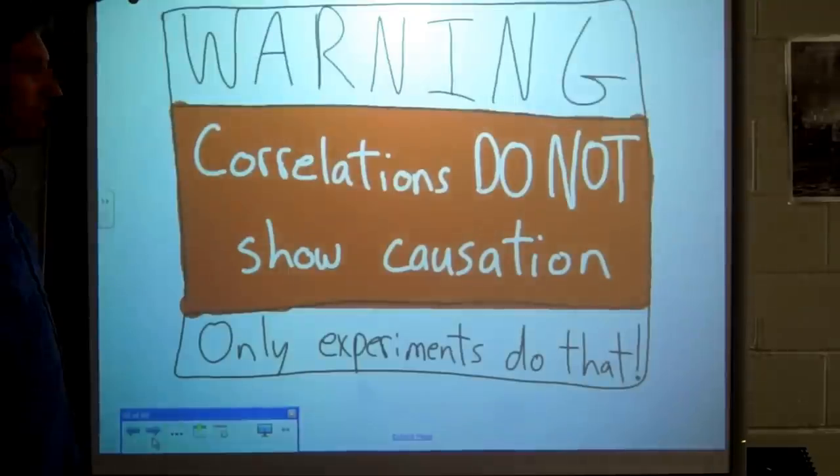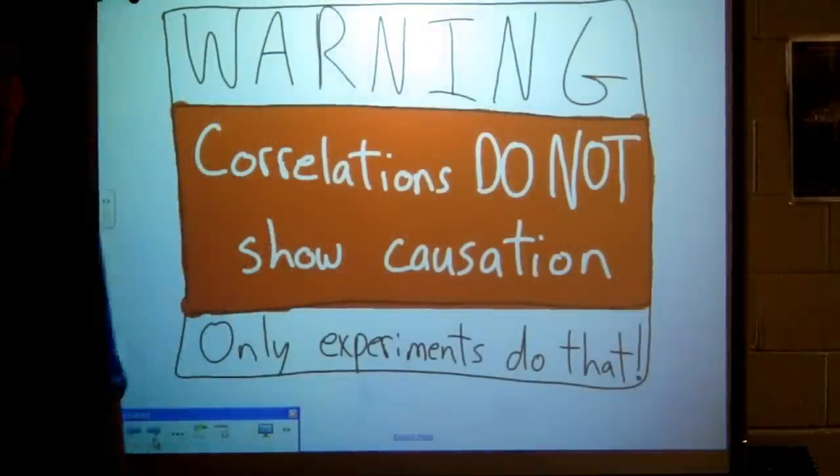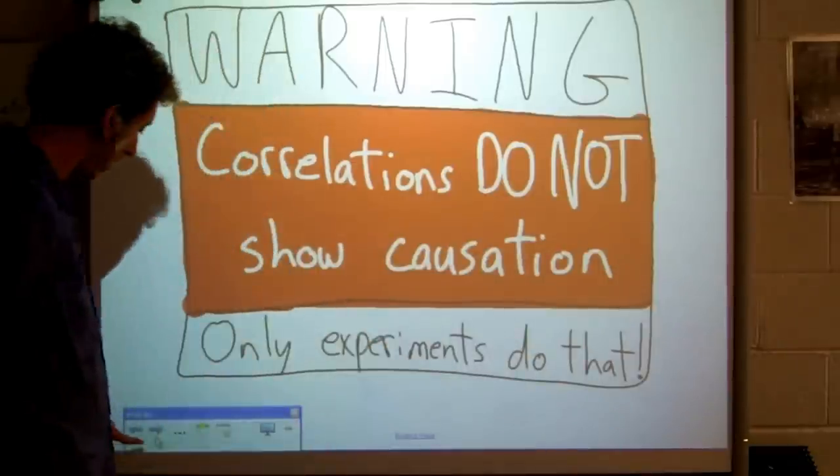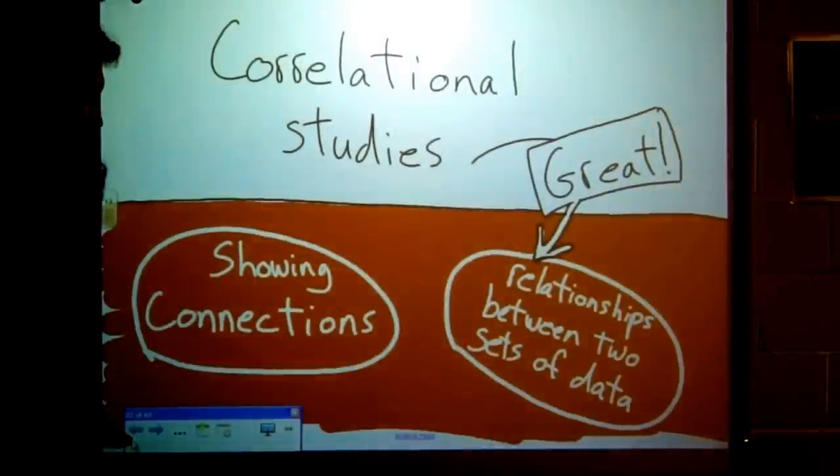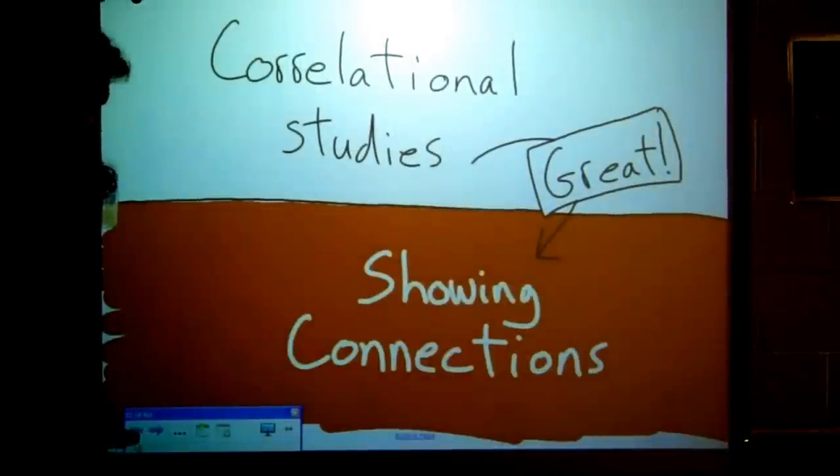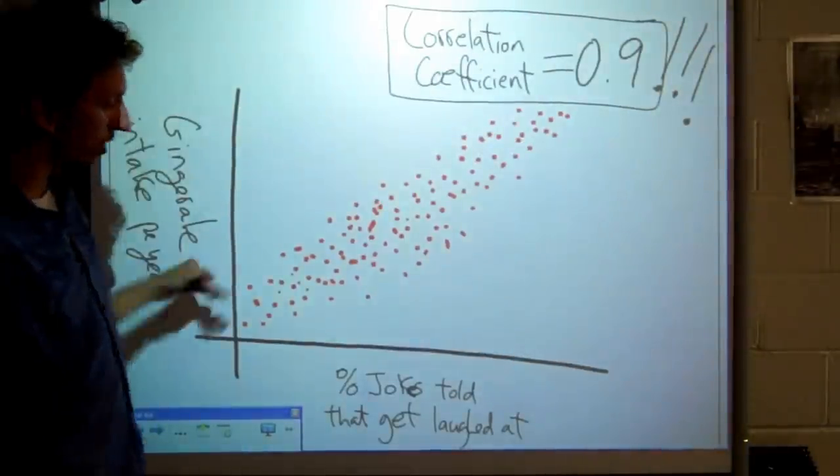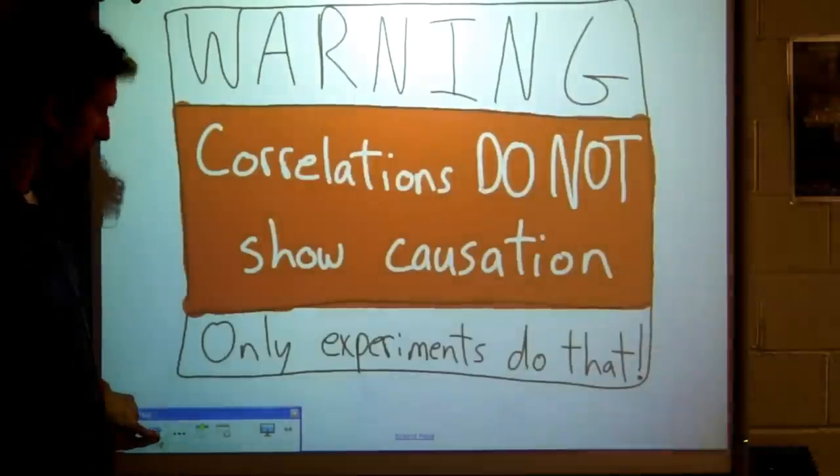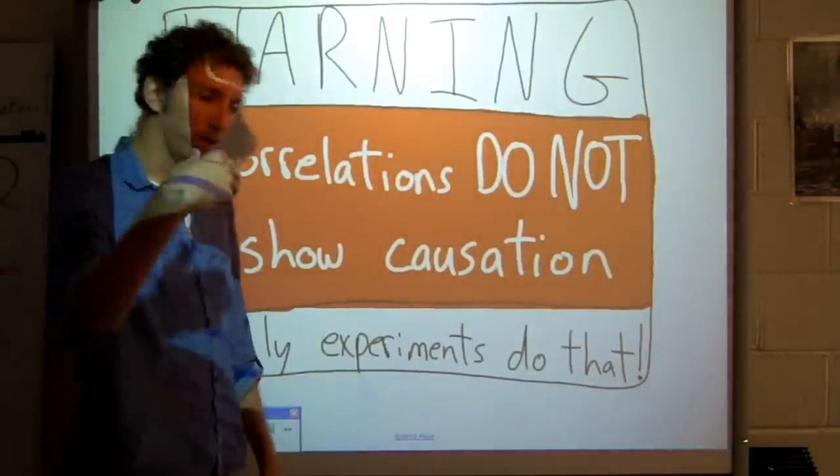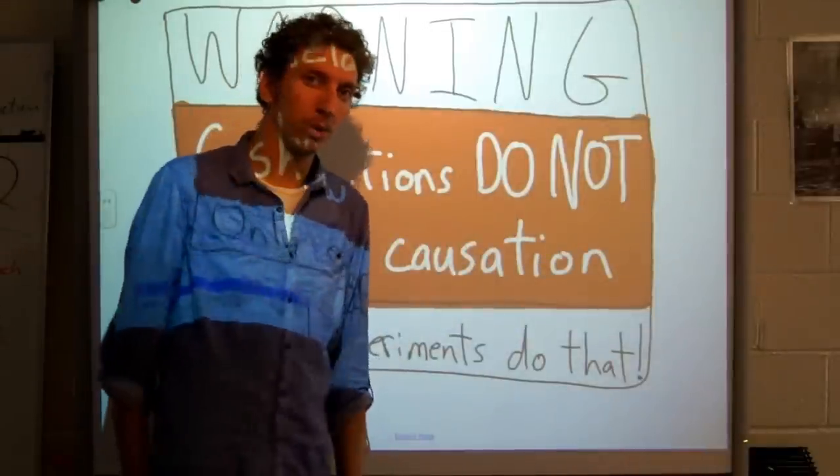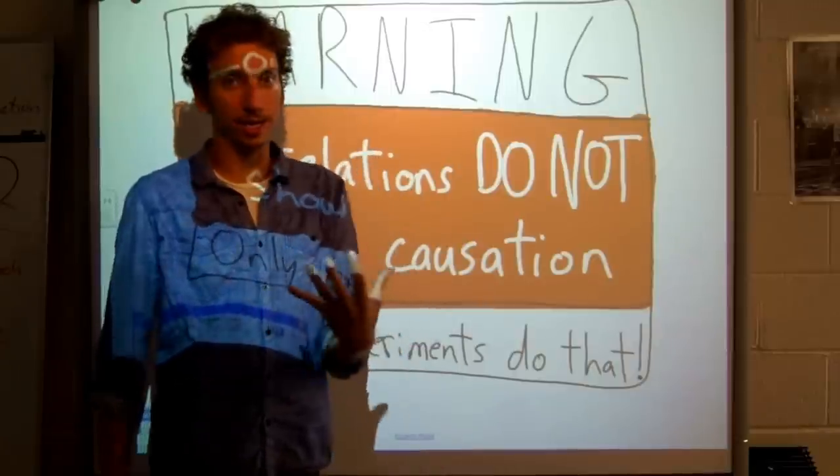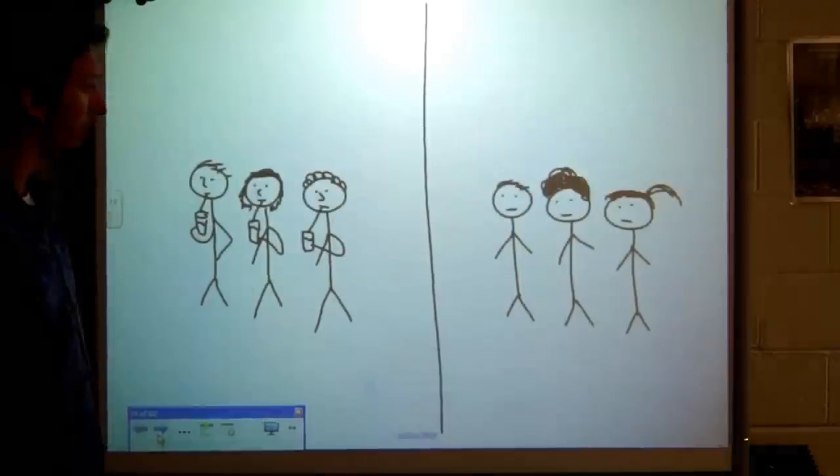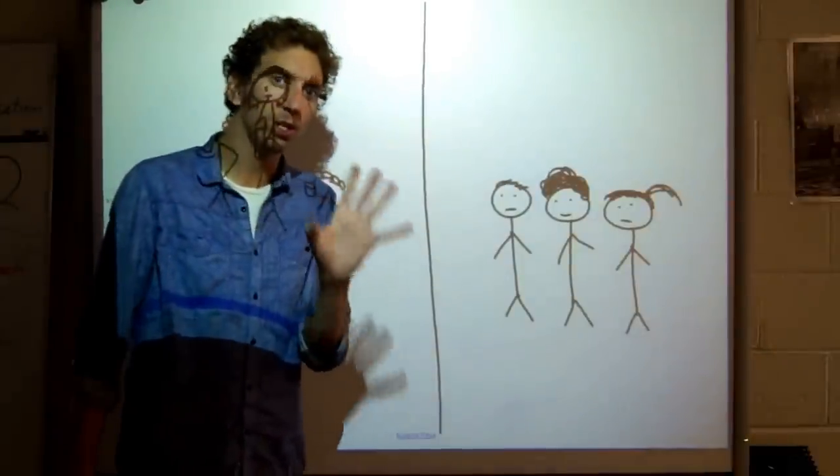Correlational studies are great for showing connections between two things, or for showing relationships between two sets of different data. But, they're not great for showing causation. Warning, correlations do not show a causal relationship. Causal meaning one thing causes the other. I couldn't say that drinking ginger ale causes you to be funnier, even though there's this connection that I've found between the two. If I wanted to say that drinking ginger ale causes being funny, I would need to put it to a scientific test, to an experiment. A correlation is not an experiment. It's a different type of research altogether.